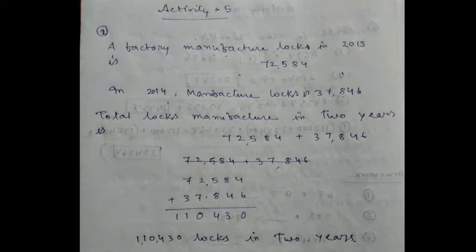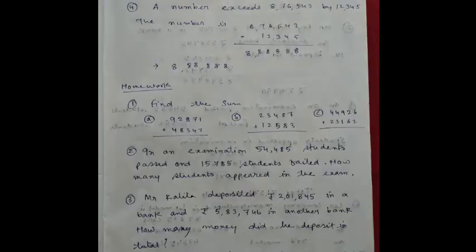Now number 3 is your homework. Number 4: A number exceeds 7 lakh 76,543 by 12,345. The number is... exceeds means it is advanced, so we have to add.